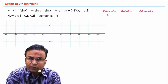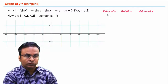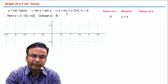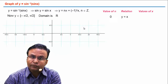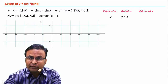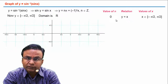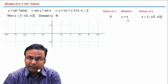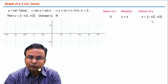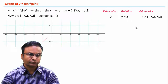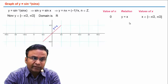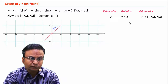Starting with n = 0: substituting gives y = x. Since y is limited to [-π/2, π/2], x also lies in that interval. This means the graph is a straight line y = x for x ∈ [-π/2, π/2] — a line passing through the origin at 45 degrees to the positive x-axis, with slope 1.